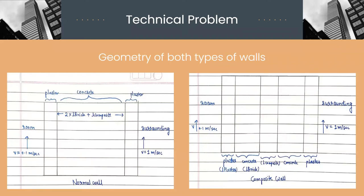This slide shows the geometry of both types of walls. In normal, being plaster, concrete and plaster. And in composite wall, being plaster, concrete, L-composite, which actually has the honeycomb structure in it, concrete and then plaster.